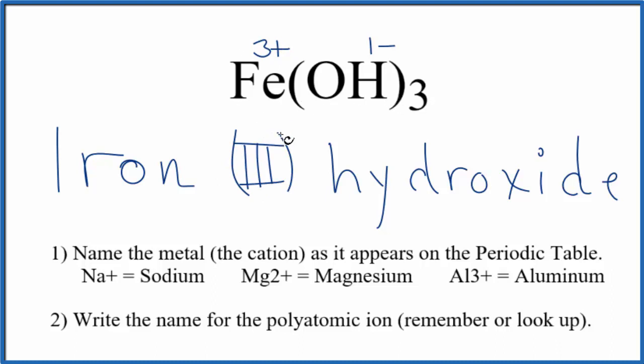So Fe(OH)₃ is called iron three hydroxide. If you were given this formula and asked to write the name, you'd know that iron has a three plus ionic charge, and that you'll need three of these one minus hydroxide ions to balance the charge.